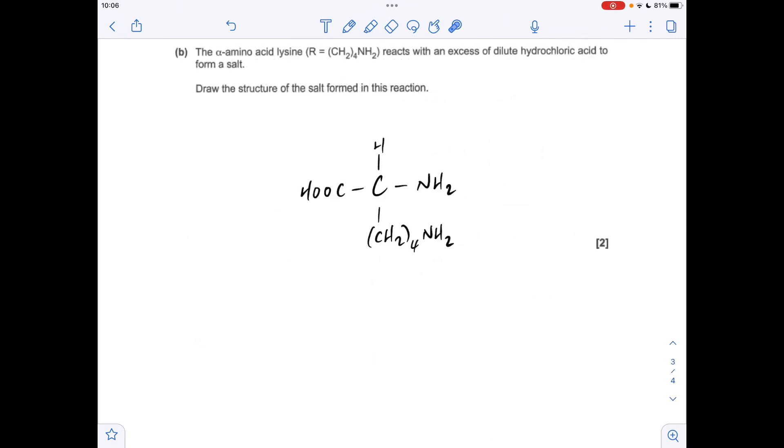Moving on to part B, so we've now got a different alpha amino acid, we've got lysine, so the R group's like this. I've not drawn this in 3D because it hasn't asked us to do that. What we've got to do is draw the structure of the salt formed when this reacts with an excess of dilute hydrochloric acid.